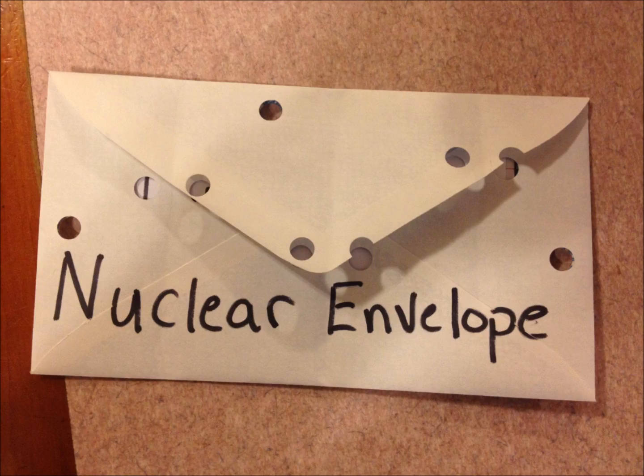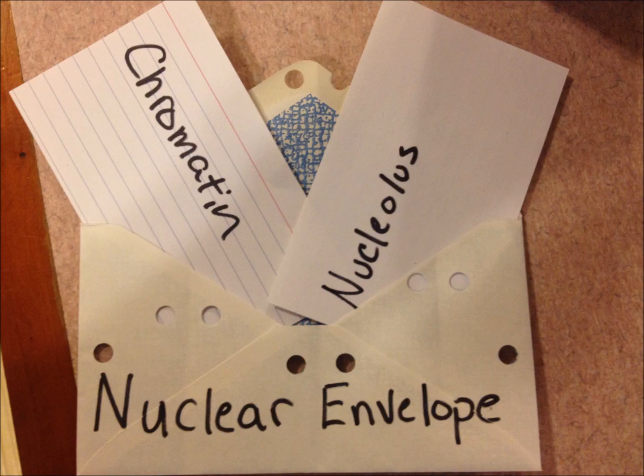The structure of the nucleus is fairly simple. The outermost part is known as the nuclear envelope, which is very porous. Inside the envelope is the chromatin and the nucleolus. The chromatin are made of chromosomes, and the chromosomes are made of DNA.